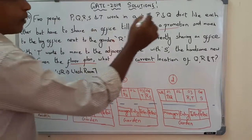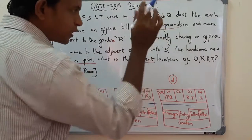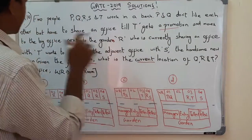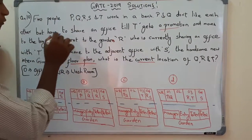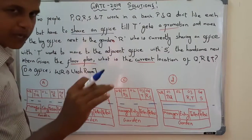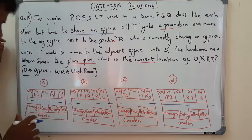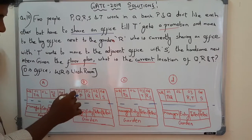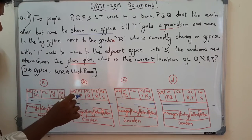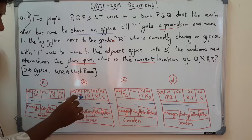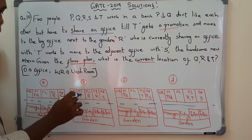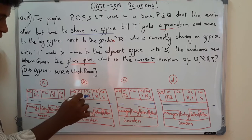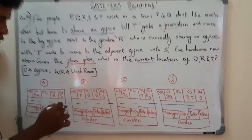P and Q don't like each other but they have to share an office, so P and Q are together. In option A, P and Q are together. Whereas in option B, P and Q are occupying different offices — P is in office number 1 and Q is in office number 2. So option B is eliminated.